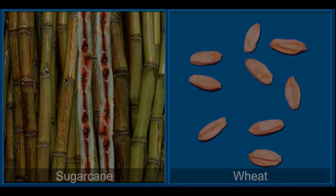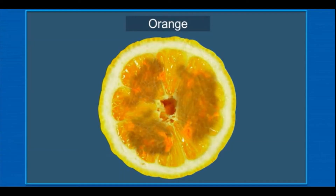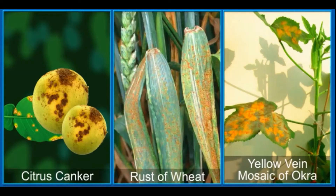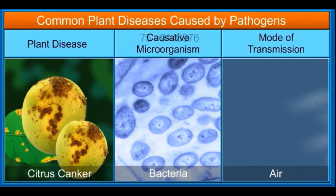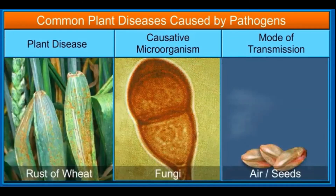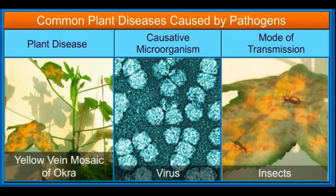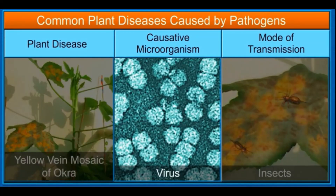Many pathogens attack crop plants like sugar cane, wheat, rice, potato and orange, and reduce their yield. Citrus canker is a bacterial disease seen in citrus plants like lemon, and the disease is transmitted through air. Rust of wheat is a fungal disease seen in wheat plants, transmitted through air and seeds. Yellow vein mosaic of okra is a viral disease seen in okra plants, transmitted through insects.